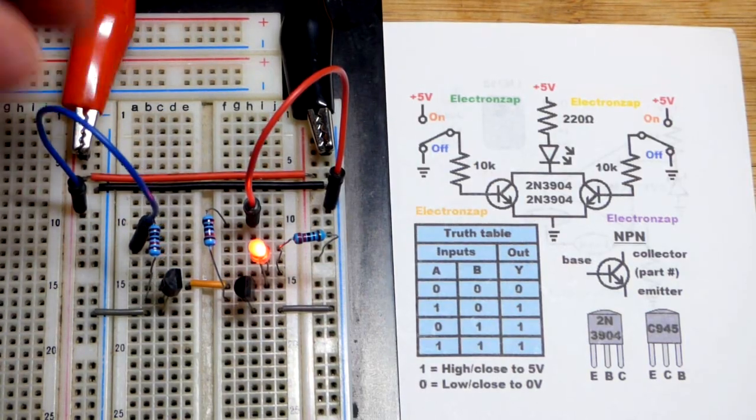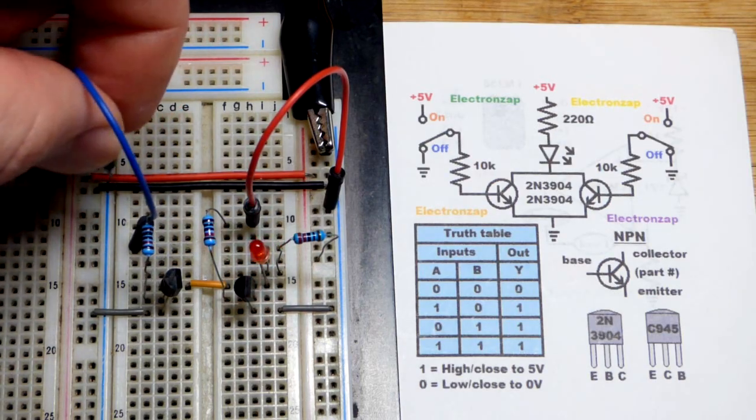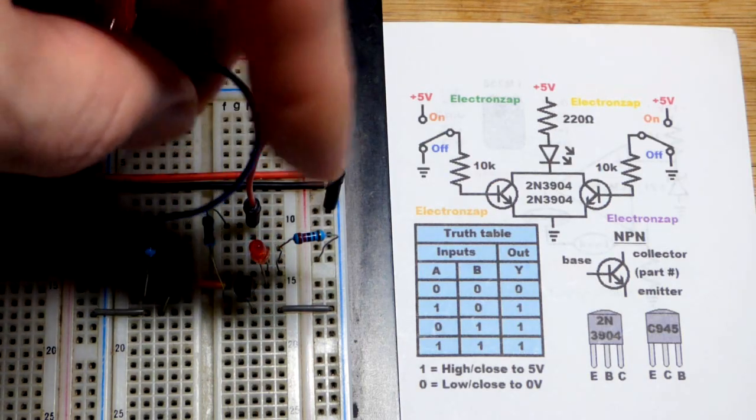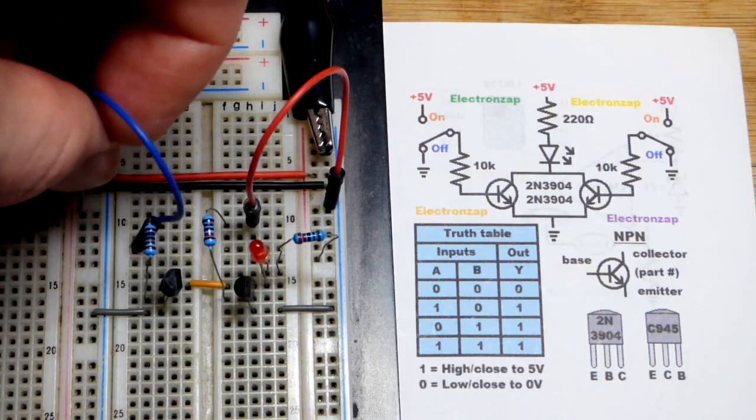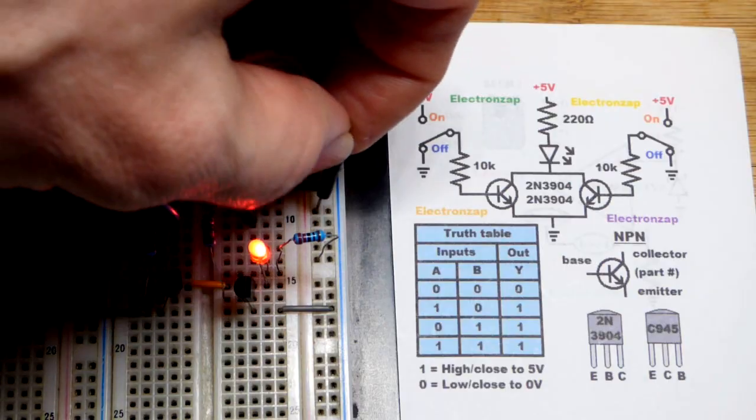Now we put that jumper, positive supply. Again, LED turns on, but if no high input, then the LED will be off right there. We can have both of these inputs high as well. We can put them both to the positive supply.